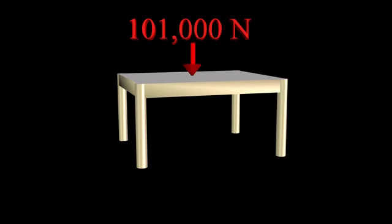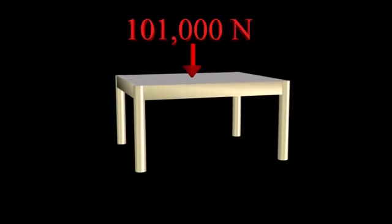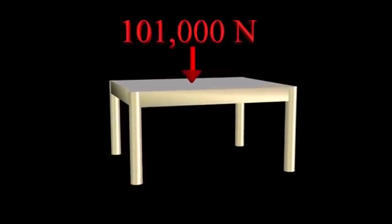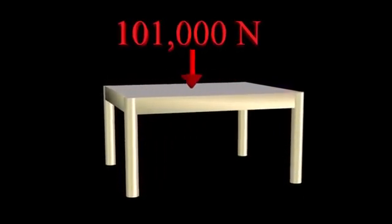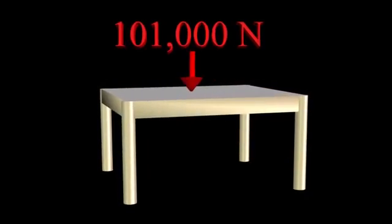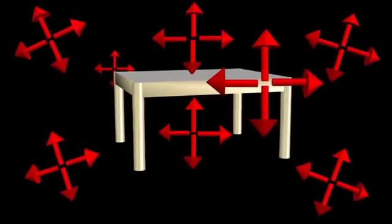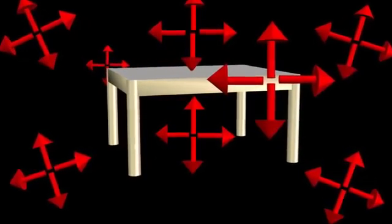If air pressure can generate such huge forces, why don't we notice it? Why doesn't the table collapse? It turns out that pressure in a fluid like air transmits in all directions, not just down.